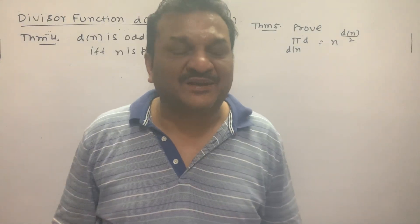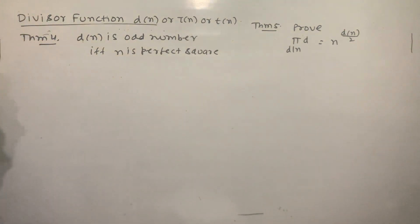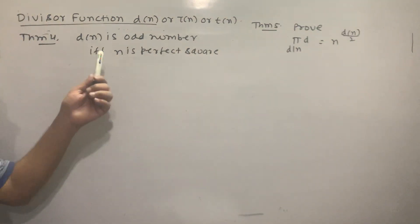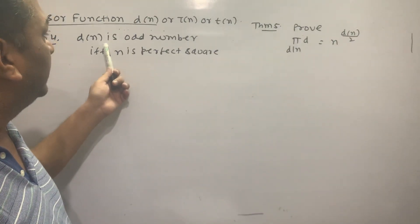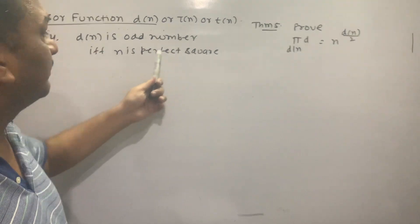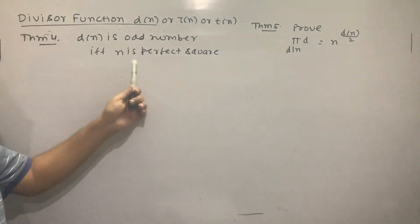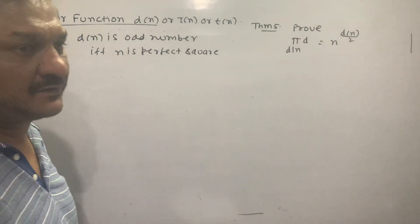Hello students. Next theorem is Theorem 4: the divisor function. d(n) is an odd number if and only if n is a perfect square.